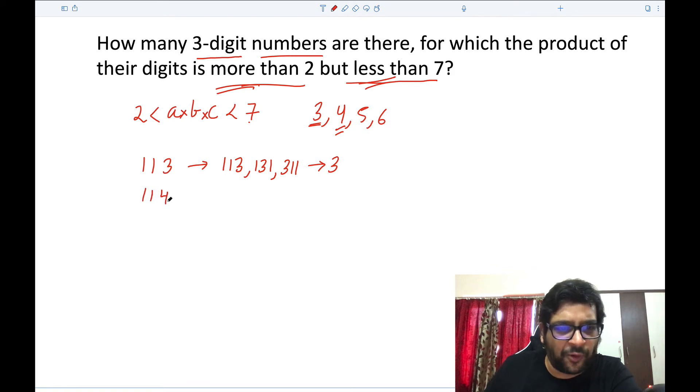There are three ways you can do this. How about four? Four you can generate by one times one times four. The same way 113 can be rearranged in three ways, the very same way one times one times four can also be rearranged in three ways: 114, 141, 411. Similarly for 115 also three ways, 116 also three ways.